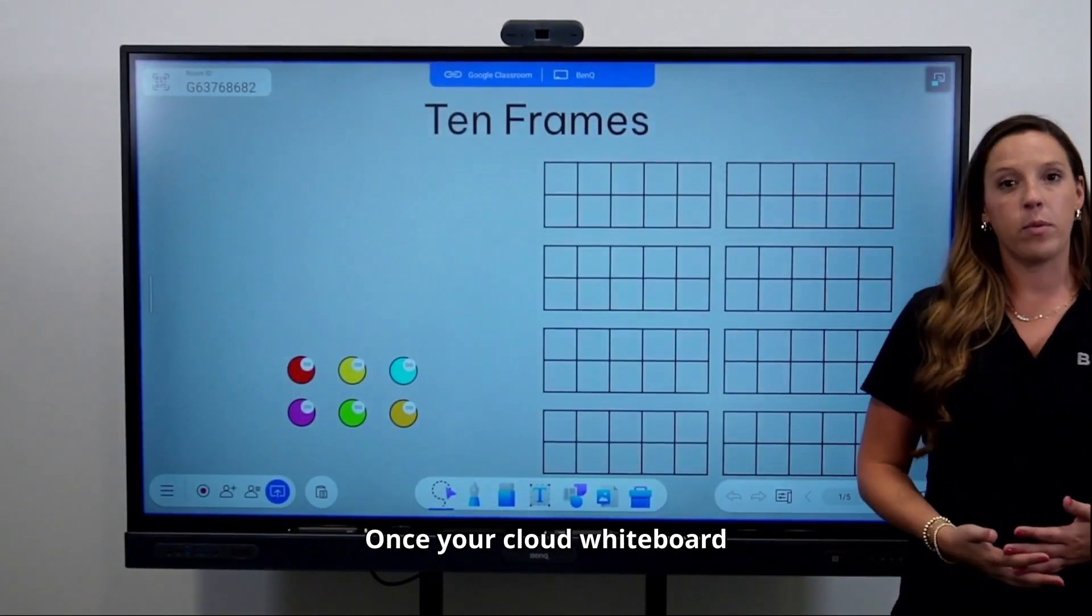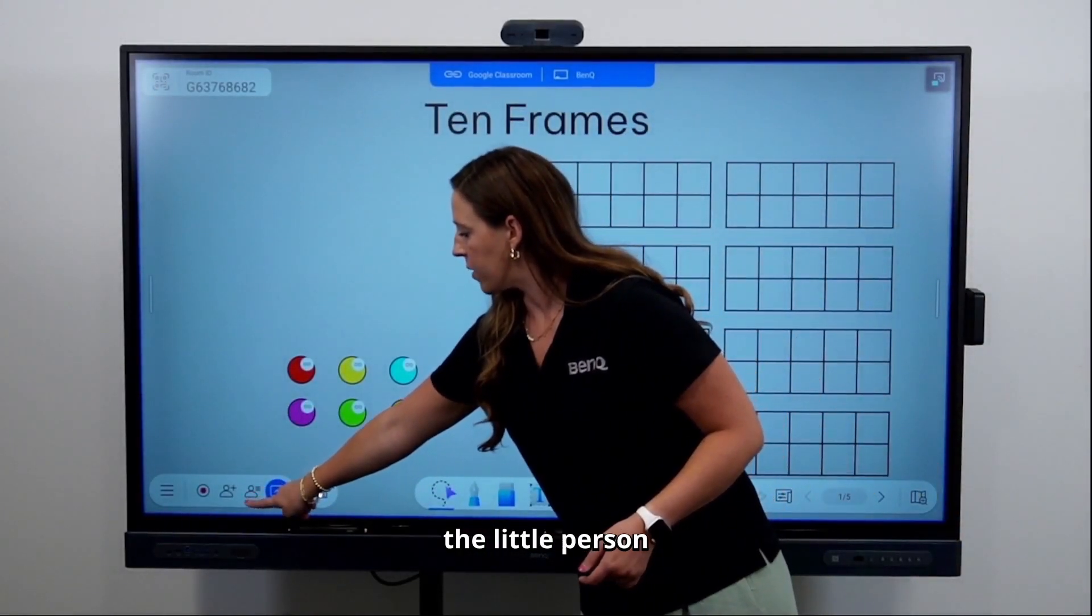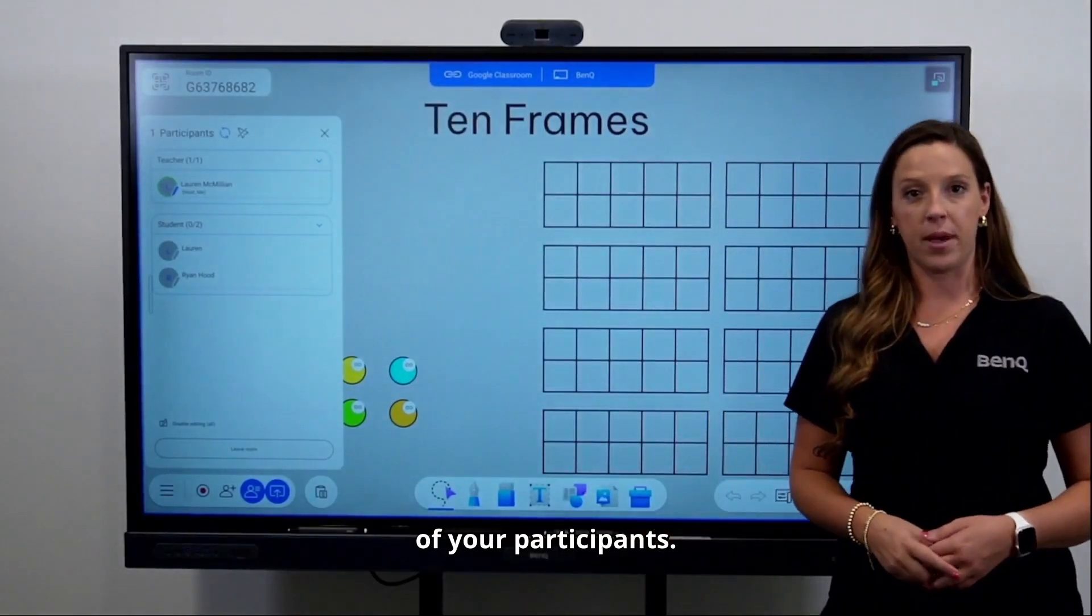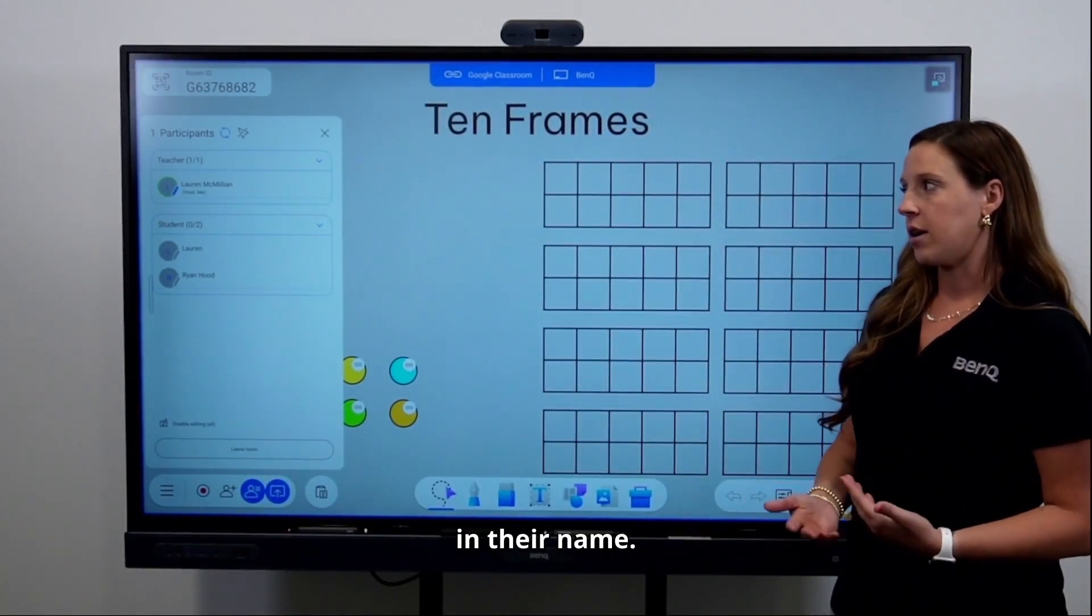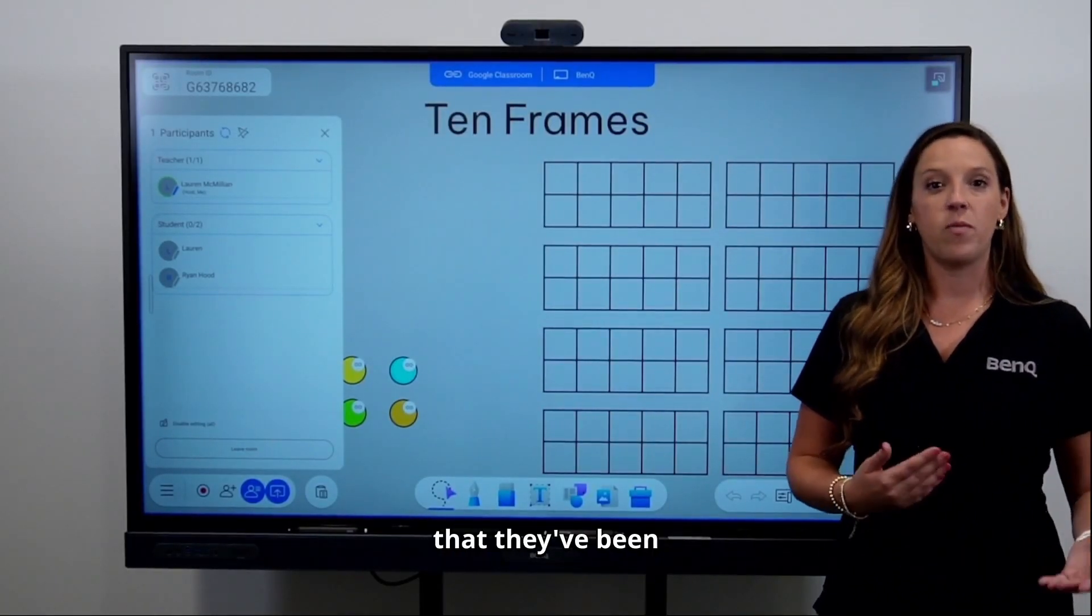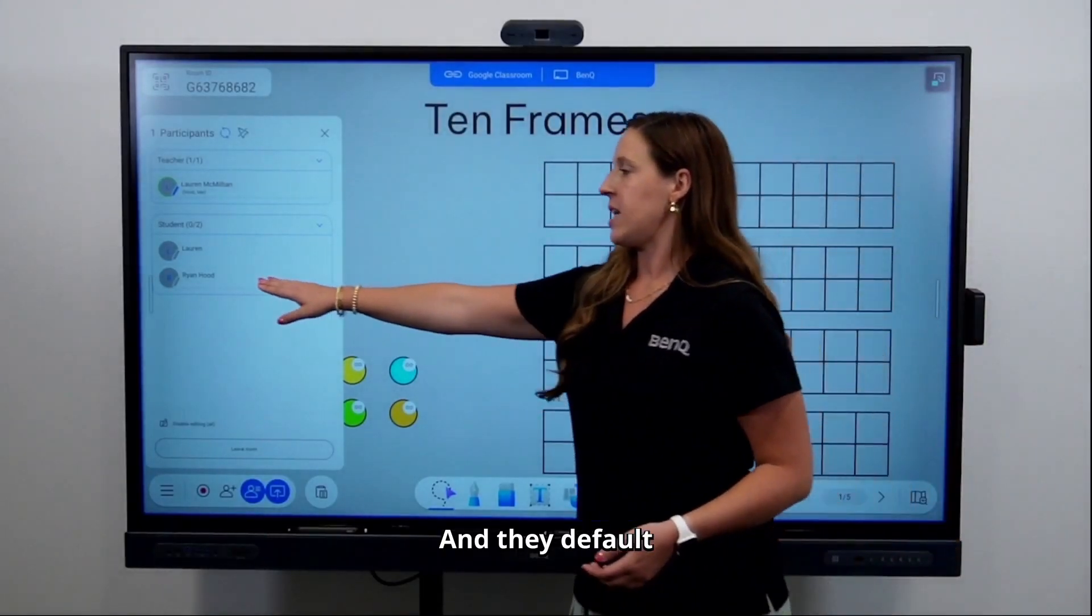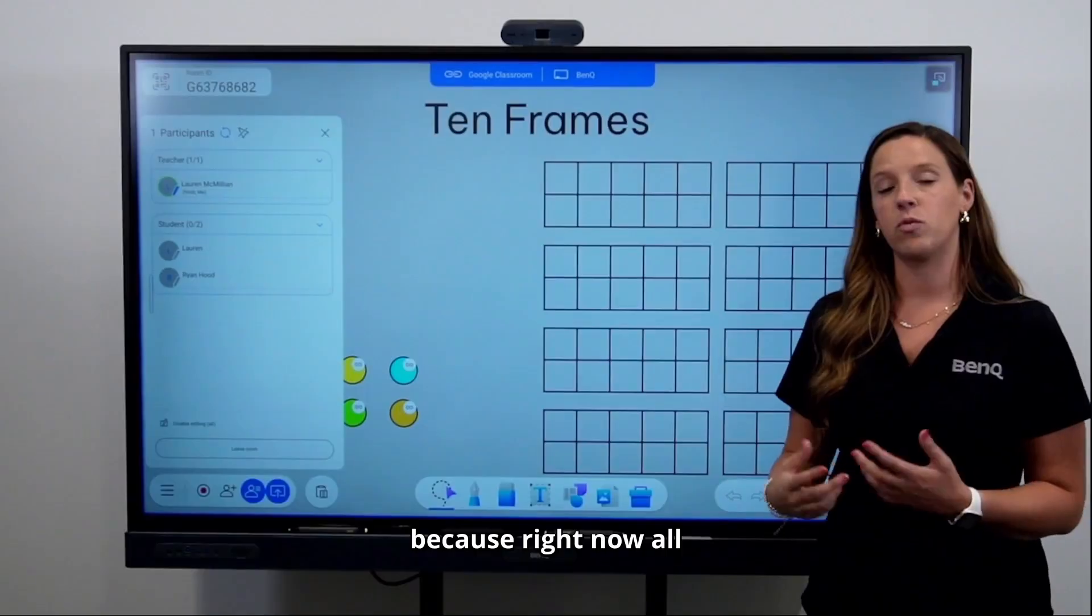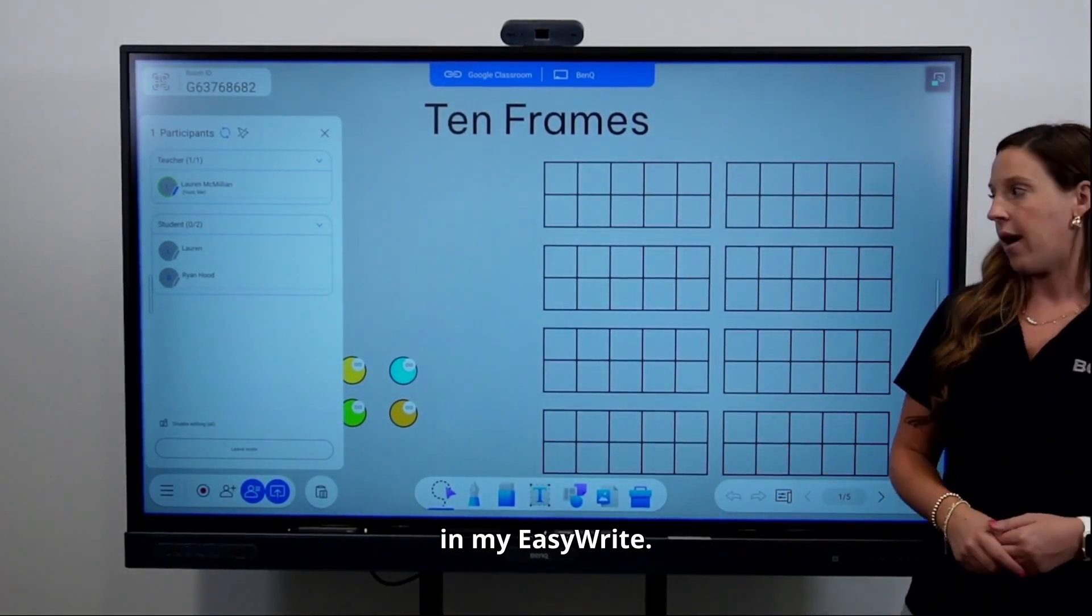Once your Cloud Whiteboard session is live, you'll have an option down here at the bottom, the little person with three lines. This will show you all of your participants. You can see your whole class list. If you use Google Classroom, it will pre-populate the name that they've been given in their Google Classroom roster. And they default as view only.